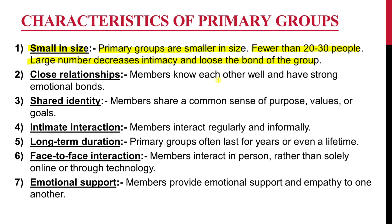Second is close relationships — members know each other well and have strong emotional bonds. Third is shared identity — members share a common sense of purpose, values, or goals. Fourth is intimate interaction — members interact regularly and informally.